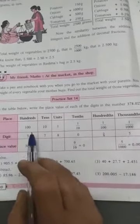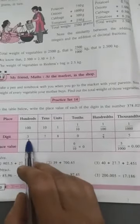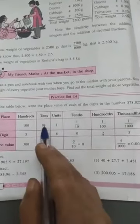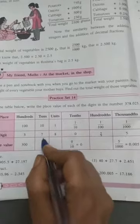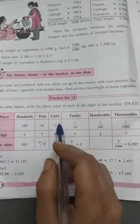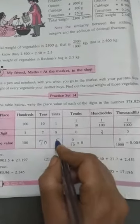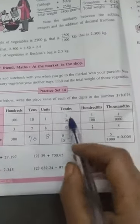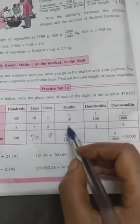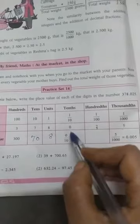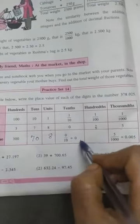Now, see, place value is 300, means it is 300. 7 tens, that is 70. 8 units is 8. Now, tenths place, there 0 is there. 0, 1 is 0, 0 upon 10, that is 0.